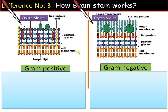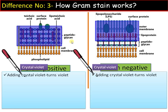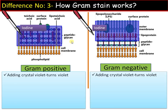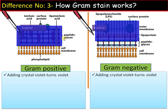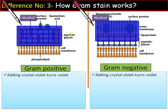Difference number three: how gram stain works. When gram staining is performed, the first step is the addition of crystal violet, which will make both bacteria violet in color — the membranes of the bacteria will take up the stain and both turn violet. The second step is the addition of iodine solution. Iodine is a mordant that will help effective staining, so it becomes more stained on addition of iodine. This is followed by the most critical step, that is the alcohol treatment.